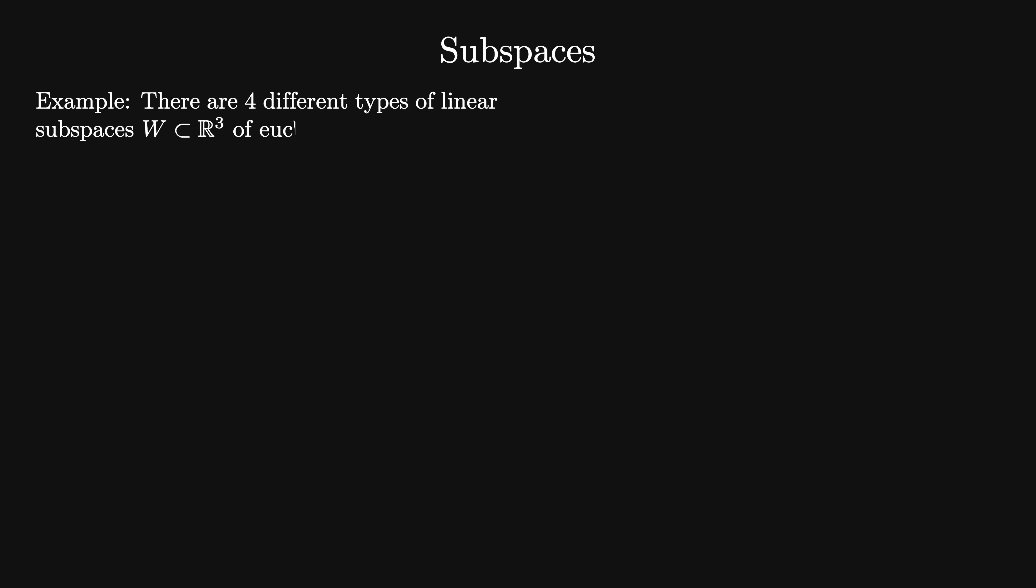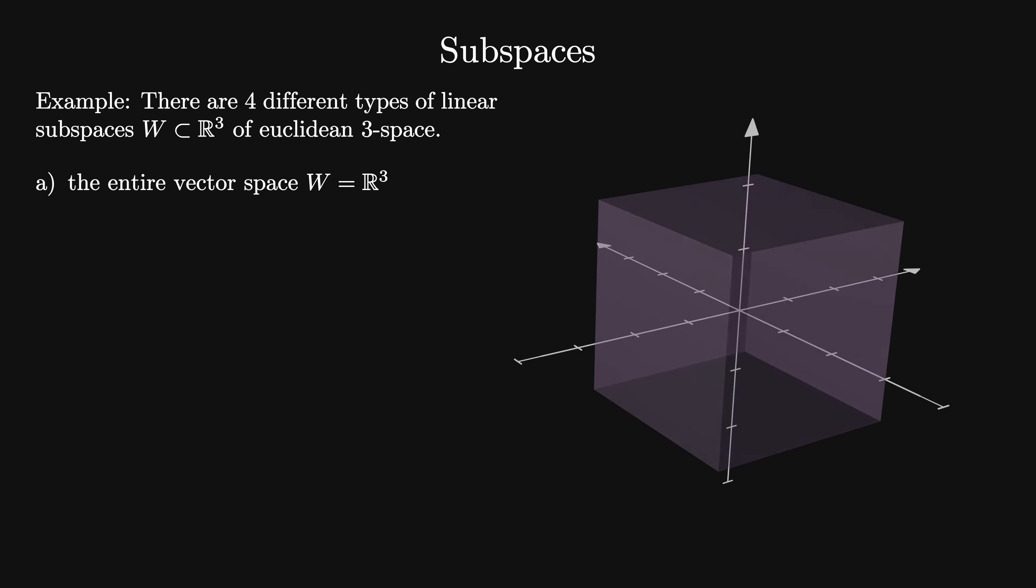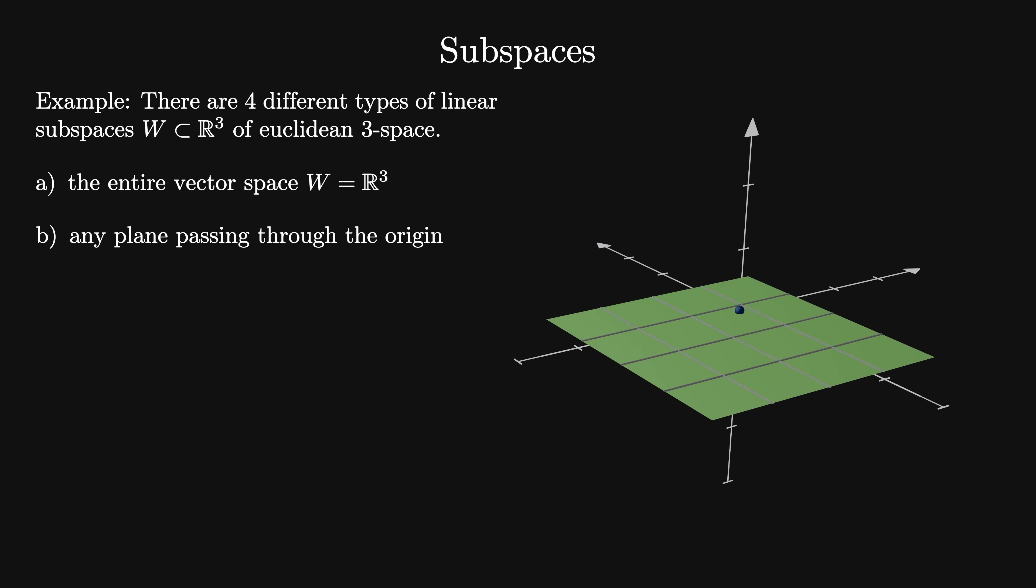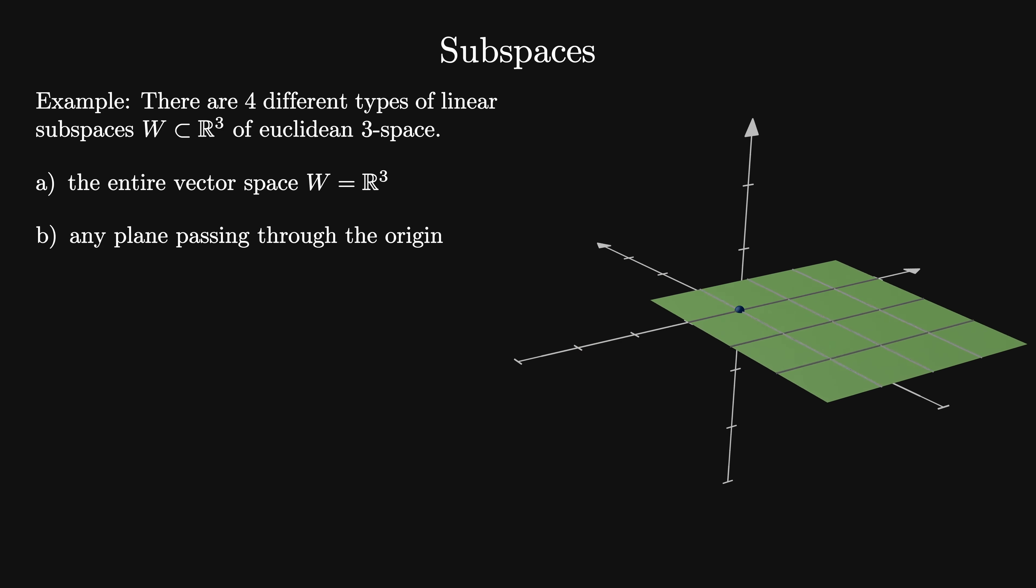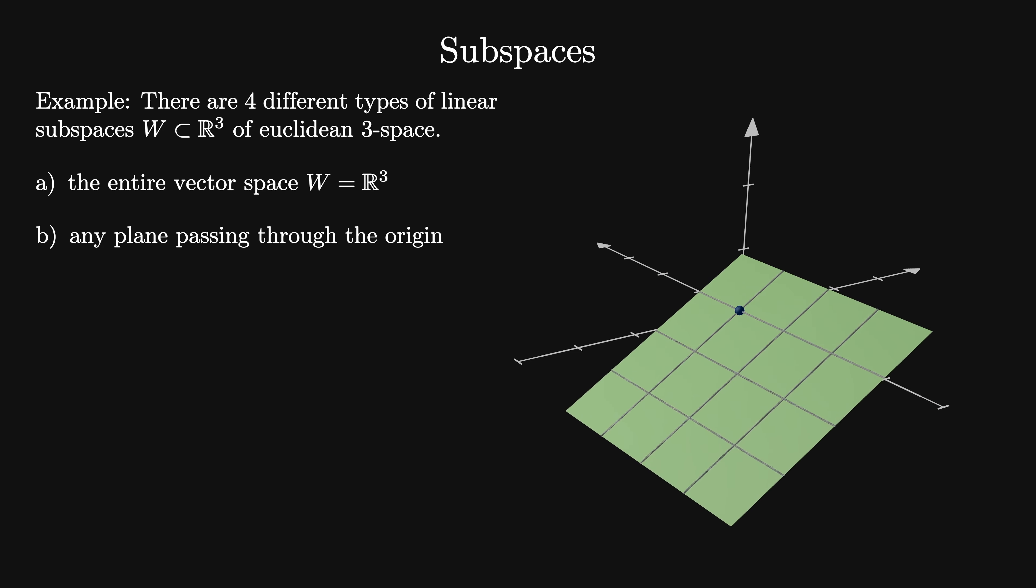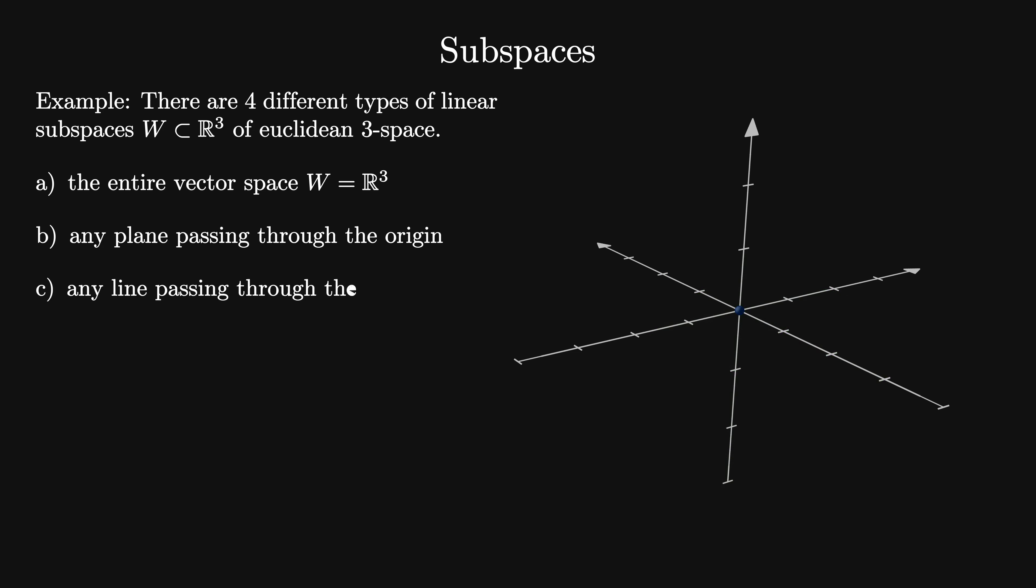For example, there are four different types of linear subspace of Euclidean 3-space: the entire vector space R³, any plane passing through the origin, any line passing through the origin, and the trivial subspace that contains only the zero vector.